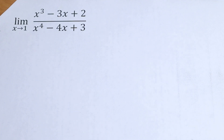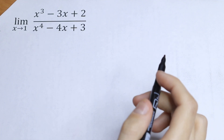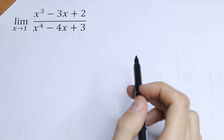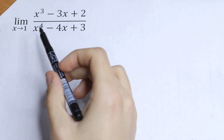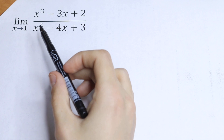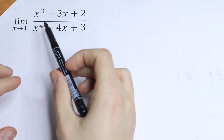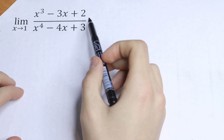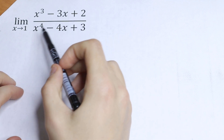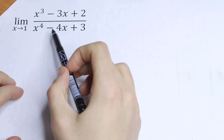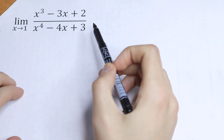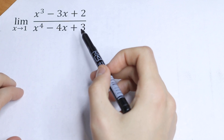Hello everyone, welcome back to higher mathematics. Today we have an interesting limit. What is the limit as x approaches 1 of the function x-cubed minus 3x plus 2, all over x to the fourth power minus 4x plus 3.